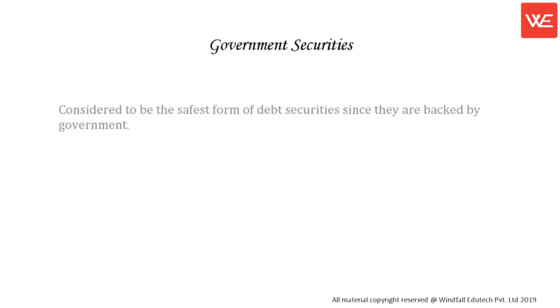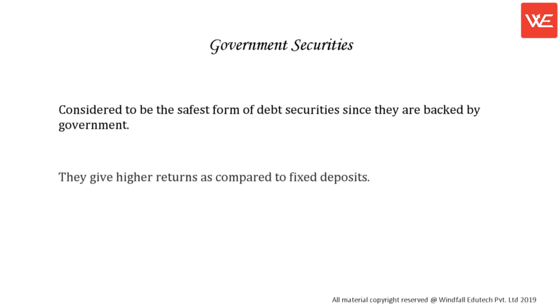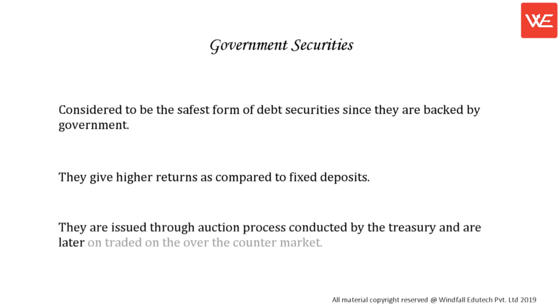Government Securities. Considered to be the safest form of debt securities since they are backed by the government. They give higher returns as compared to fixed deposits. They are issued through an auction process conducted by the Treasury and are later traded on the over-the-counter market.